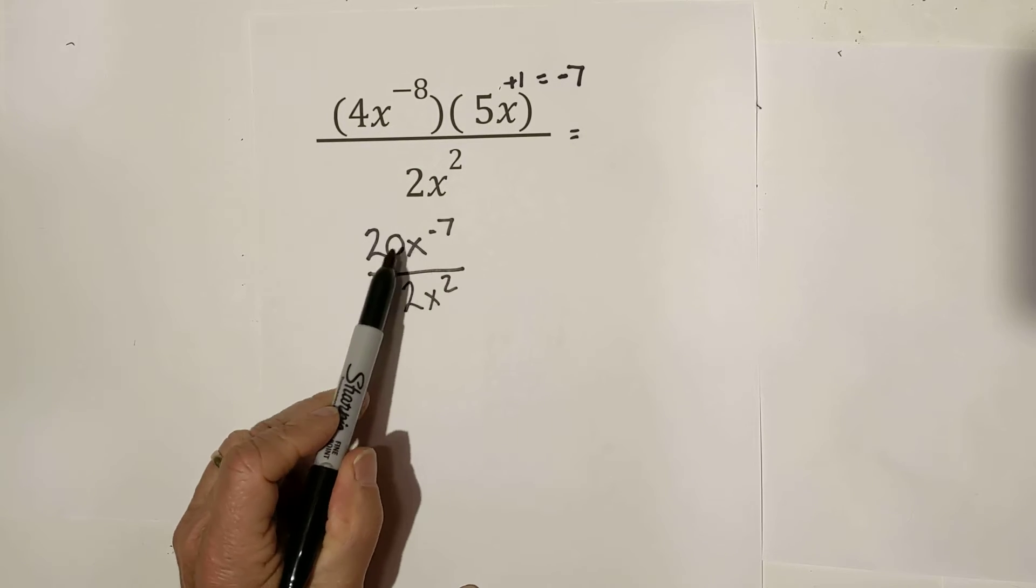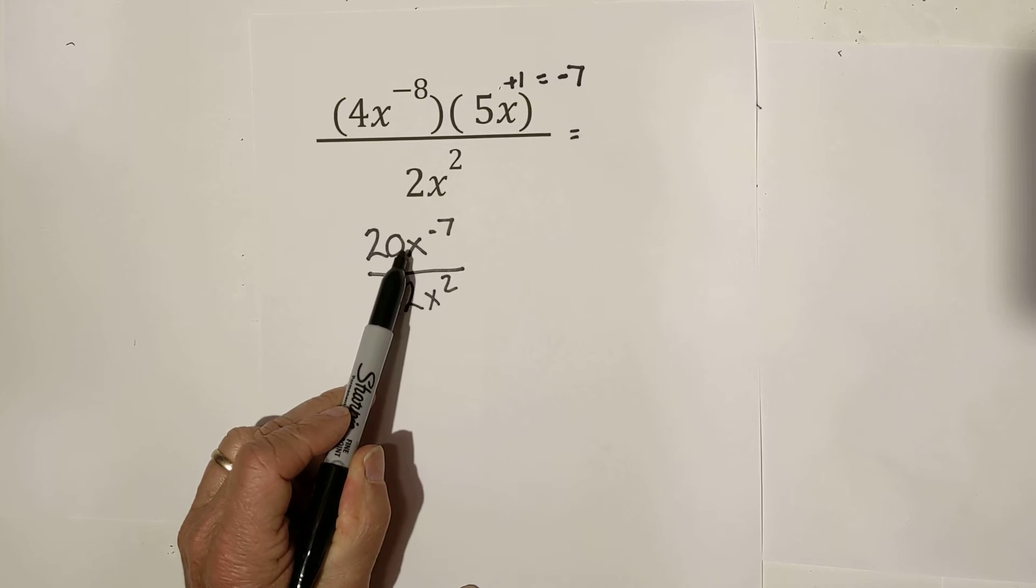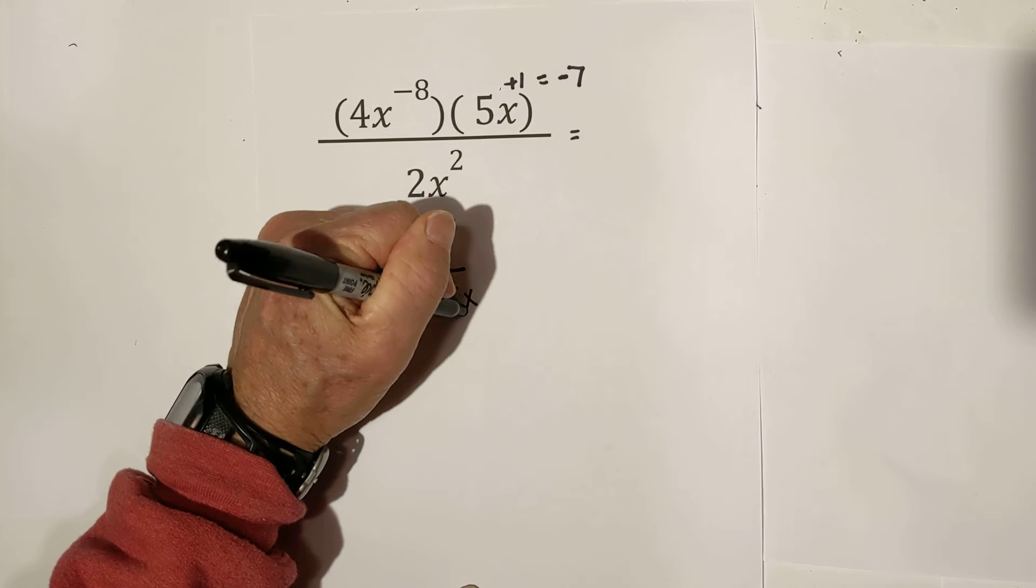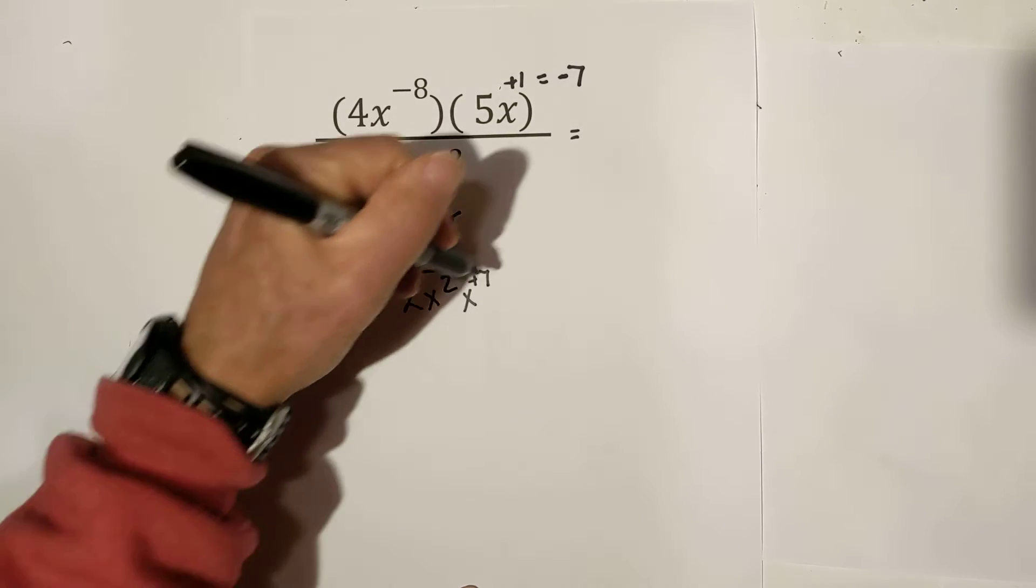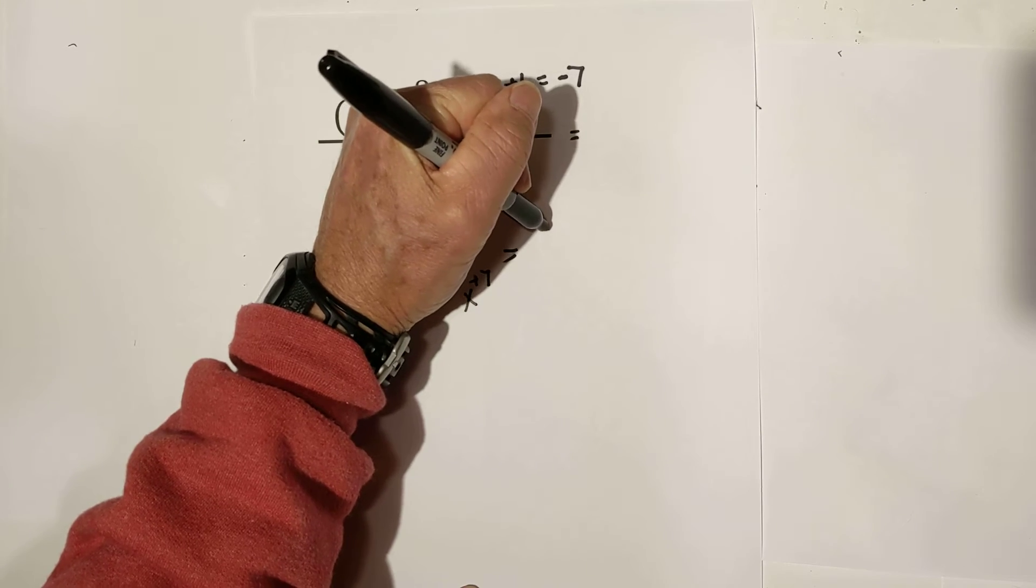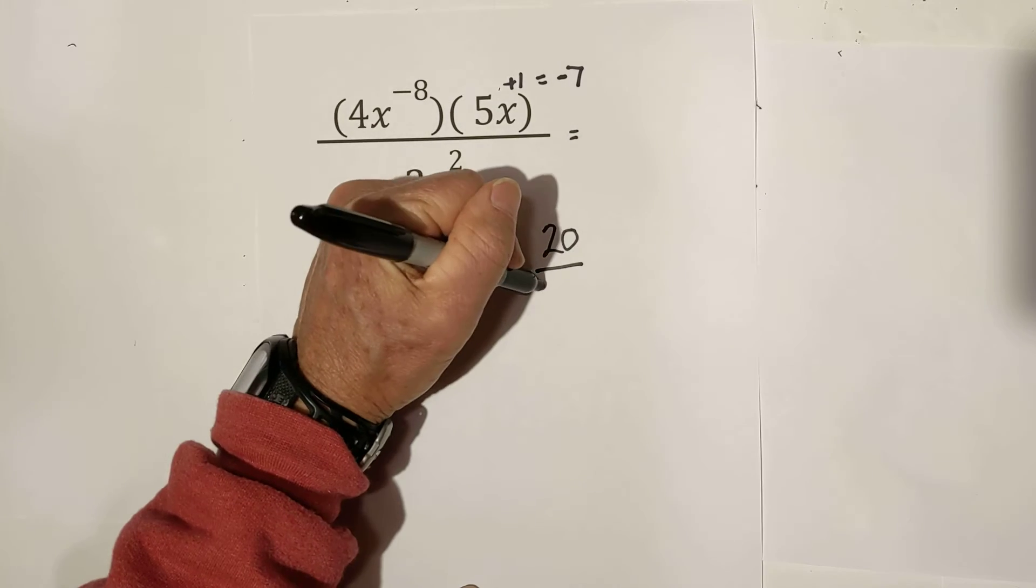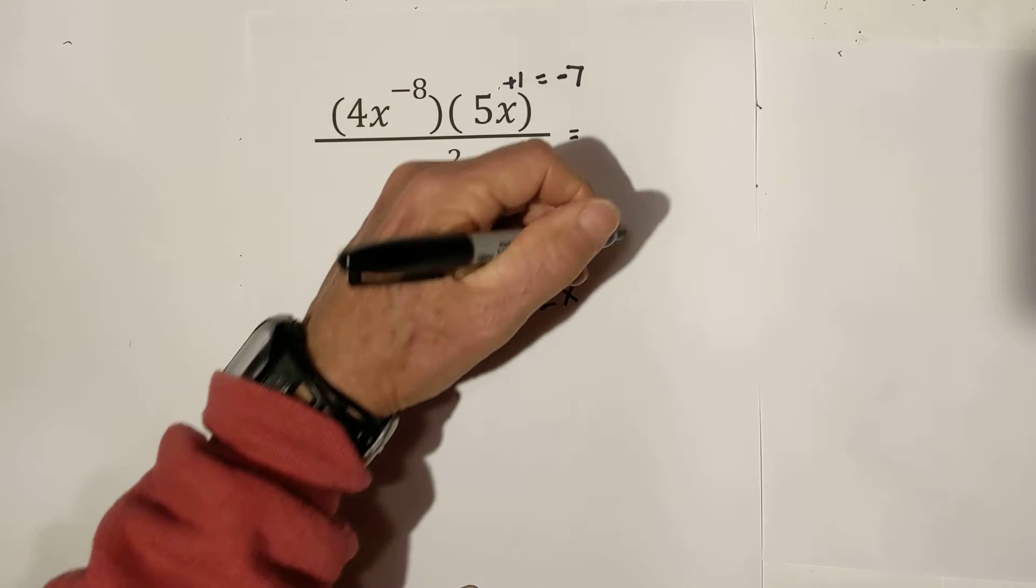Now, we have the same thing. Remember, you only move what it's attached to, and it's attached to the x. So, you've got to move this to the bottom, so it's going to be x to the 7. These will cancel. This becomes a 20 over 2x, and remember, we're going to add them. 7 plus 2 is 9.